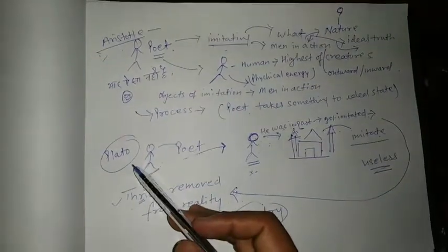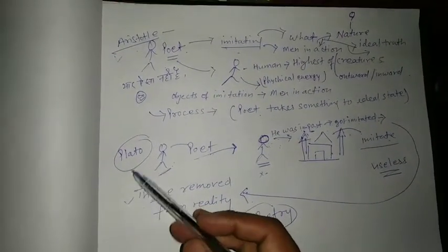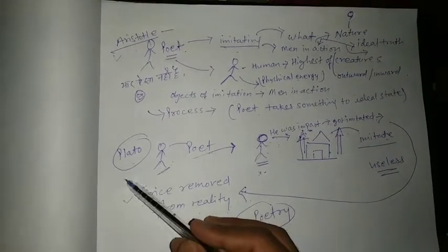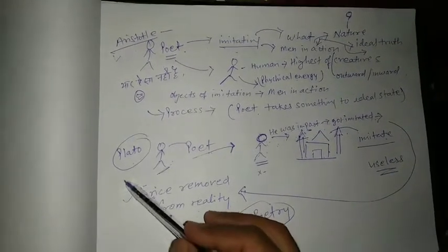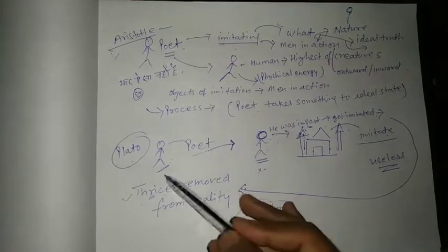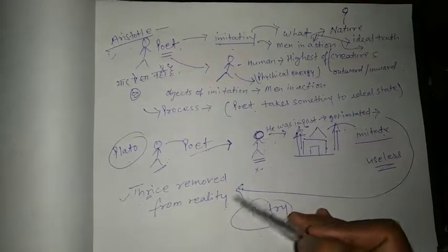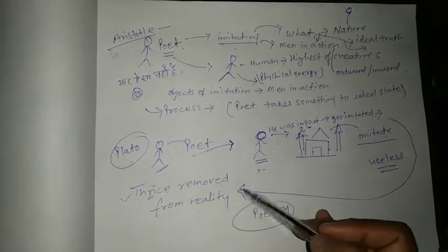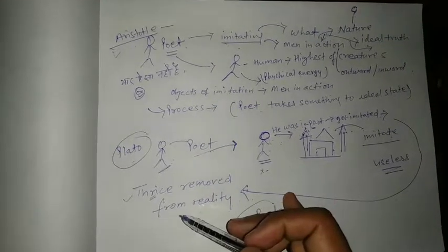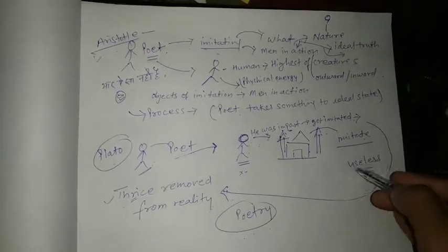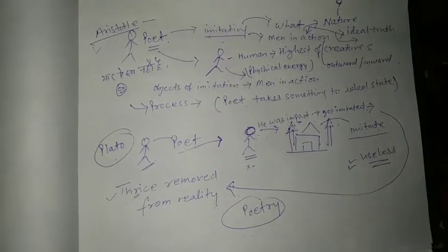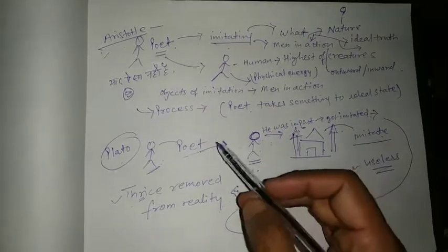The argument starts with Plato's statement: thrice, the imitation or you can say poetry is thrice removed from reality. So what does he mean by thrice removed from reality? That there are poetry in reality three times. And he simply said, poetry is useless for people. What does he mean by this? Let's make it clear.